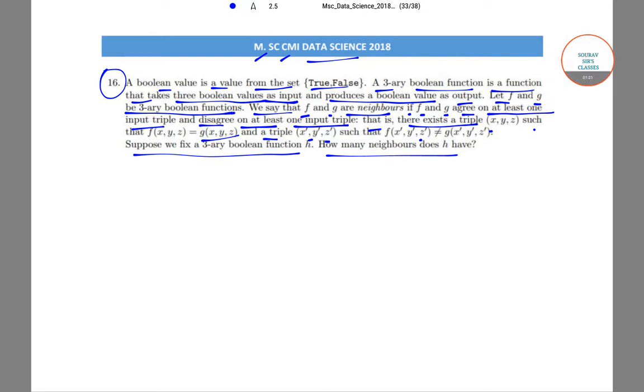So let's solve the problem. We have a boolean function h. So h is basically h(x,y,z). Now x can take any of the values from true and false. So y also can take any value from true and false and z also can take any value from true and false.